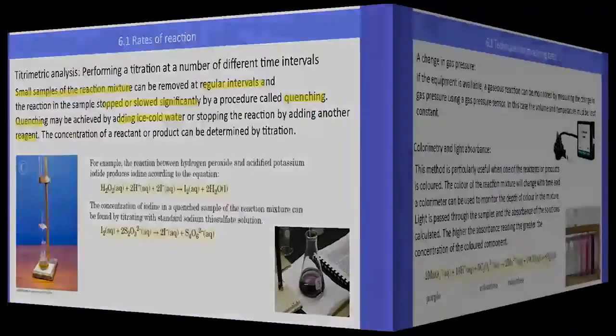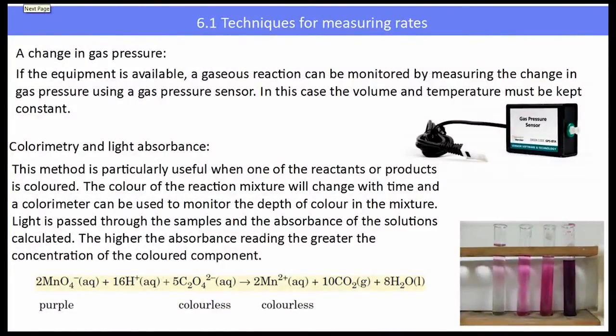Another way that we might look at measuring the reaction rate is to look at a change in gas pressure. We have available gas pressure sensors which allow us to measure the change in gas pressure in a closed system. Another important thing to consider about gases is that the volume and the temperature must be held constant if you are measuring the pressure, because if those two things change it is going to change the value of the pressure. So we need to do it in a closed environment and we also need to use a water bath.